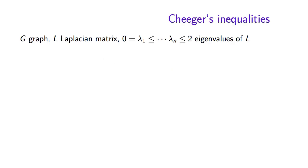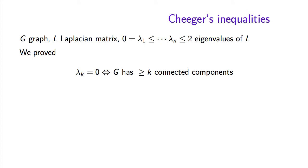The Cheeger inequalities are a relationship between the second smallest eigenvalue of the Laplacian of a graph and the expansion of the graph. So if G is a graph, L is its Laplacian matrix, and λ₁ up to λₙ are the eigenvalues of L sorted in increasing order and counting multiplicities. Something that we proved in the last lecture was that the kth smallest eigenvalue is 0 if and only if G has k or more connected components. In particular, λ₂ is 0 if and only if G is disconnected, and G is disconnected if and only if the expansion of the graph is 0. The Cheeger inequalities provide a stronger connection between λ₂ and the expansion.